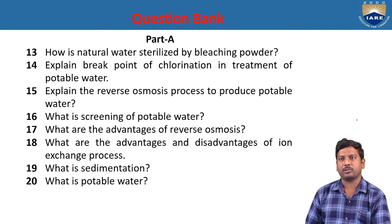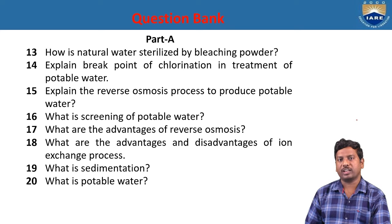Explain reverse osmosis process to produce potable water. Reverse osmosis is the process of flow of solvent molecules from higher concentration to lower concentration when both are separated by a semi-permeable membrane. Finally, we get water free from impurities and contaminants — that is the reverse osmosis process and we get potable water.